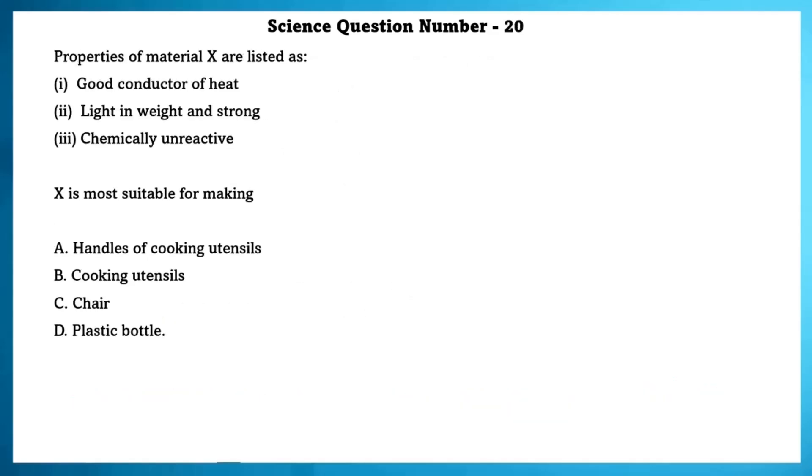Science question number 20. Properties of a material X are listed as good conductor of heat, light in weight and strong, chemically unreactive. X is most suitable for making cooking utensils.